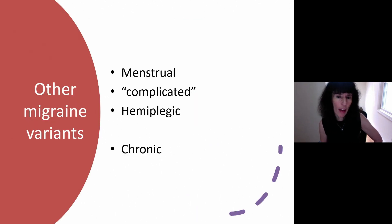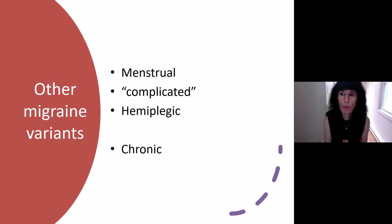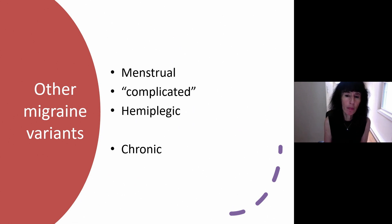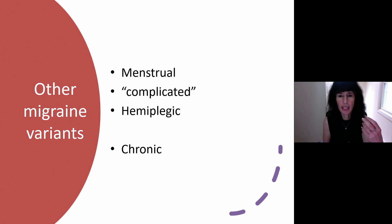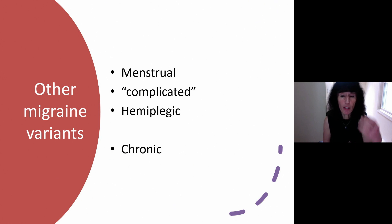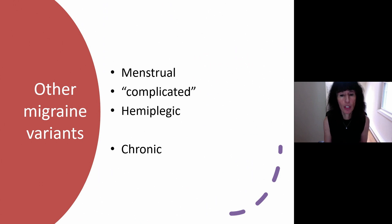Other migraine variants: menstrual migraine occurs only with menses. Complicated migraine is migraine with focal neurologic symptoms during the event. Hemiplegic migraines are pretty well understood, often familial — you can do genetic testing for this, though it's not covered by many insurers and is very expensive. That's a migraine where half the body becomes weak or paralyzed, looking for all the world like a stroke. You have to do a stroke workup. Patients have often had several stroke workups by the time they roll into an outpatient headache clinic.